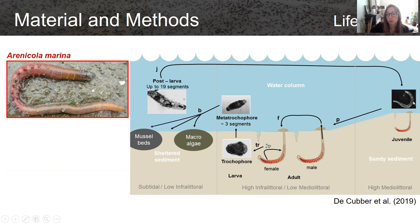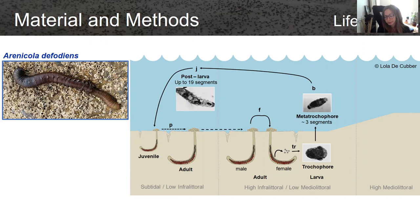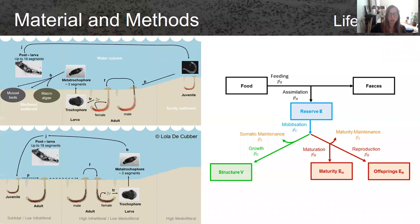For Arenicola defodians, the life cycle was not clear until recently. We managed to do boat sampling of juveniles of Arenicola defodians, and that's why we think that they recruit on the subtidal muds and then colonise the lower shores when they get older. We then applied a DEB model to the species, which enables us to derive the growth and reproduction of each individual, but also its life stage and therefore its location on the beach.